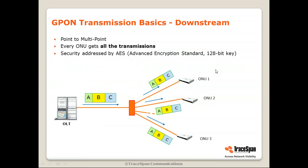Now let's talk about downstream transmissions. Whatever the OLT sends, all the ONUs can see. So if the OLT sends different packets, it's up to the ONU to determine if a packet is intended for it or not. Packets are marked — each one has a different header. The header says this is a broadcast message intended for everyone, or it's intended for ONU ID 1, 2, 3, etc., and only that ONU looks at it. The other ONUs must ignore it, but every ONU receives all transmissions.